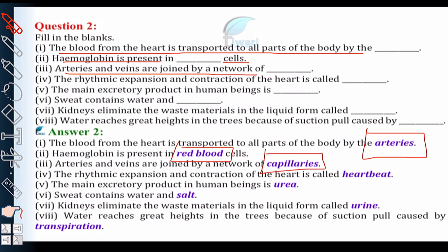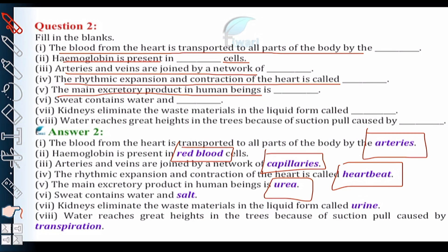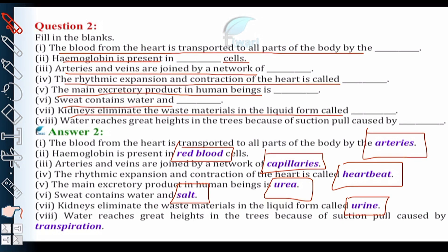The rhythmic expansion and contraction of the heart is called heartbeat. The main excretory product in human beings is urea. Sweat contains water and salt. Kidneys eliminate waste materials from the body in liquid form called urine.